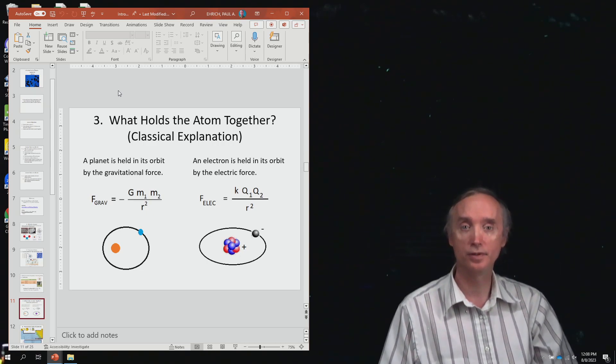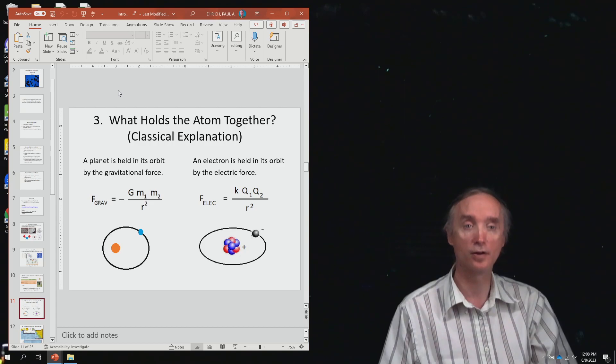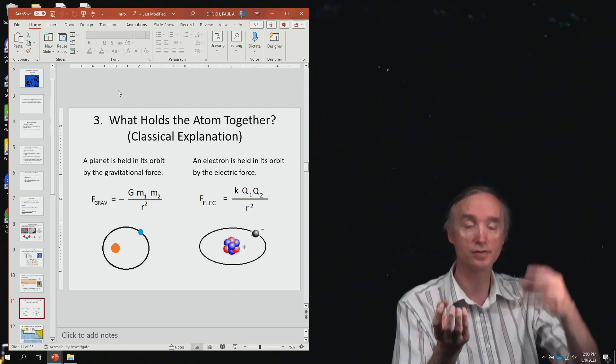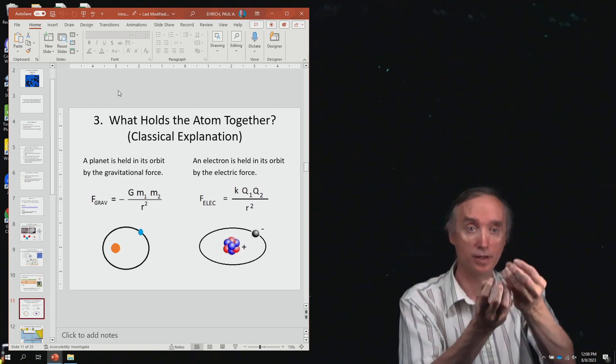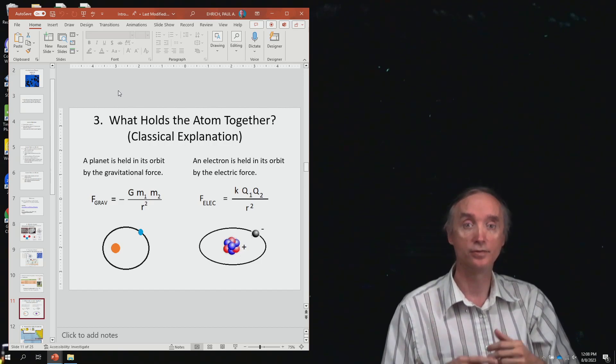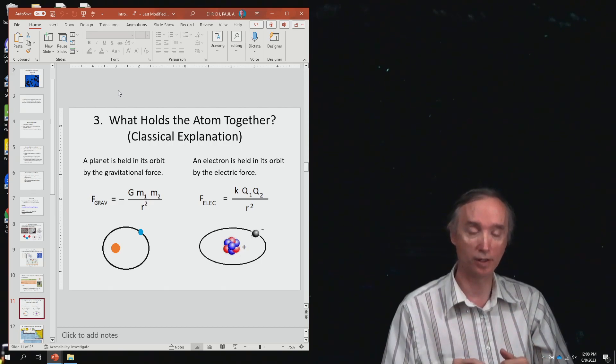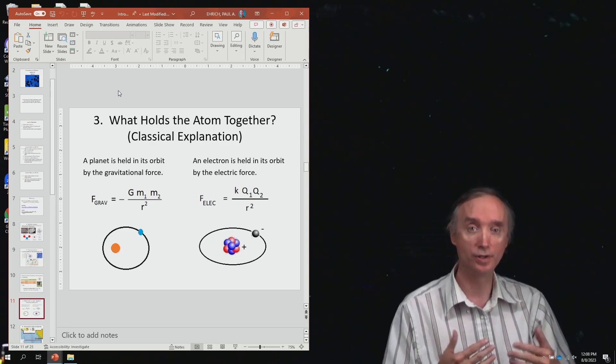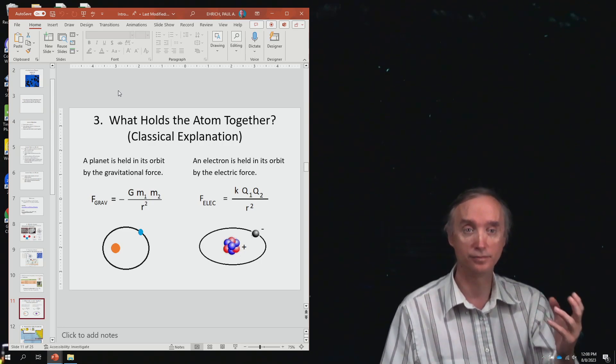Then what holds the atom together? This is from the next lesson when we talk about electrostatics. You should know that it's the electromagnetic force that holds the atom together. So opposites attract. The positive nucleus and the negative electrons are going to be attracted to each other. Don't worry about that formula yet, but you are going to need to know that formula for electricity. That's Coulomb's Law. And you will need to know that in the next lesson.